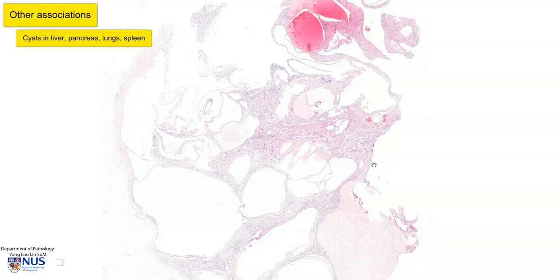Autosomal dominant polycystic kidney disease can also be associated with cystic disease of other organs, such as the liver, the pancreas, the spleen, and even the lungs. Of note, these patients are also at risk of having intracranial berry aneurysms as well as aortic aneurysms.